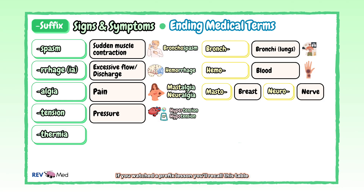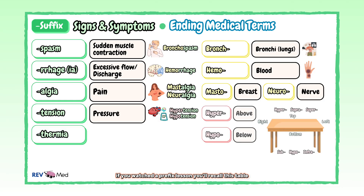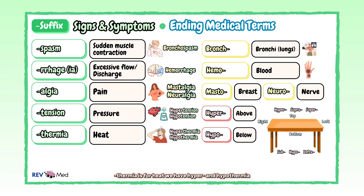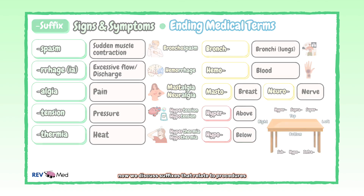If you watched the prefix lesson, you'll recall this table. "-Thermia" is for heat. We have hyper- and hypothermia for abnormally high or low body temperature.